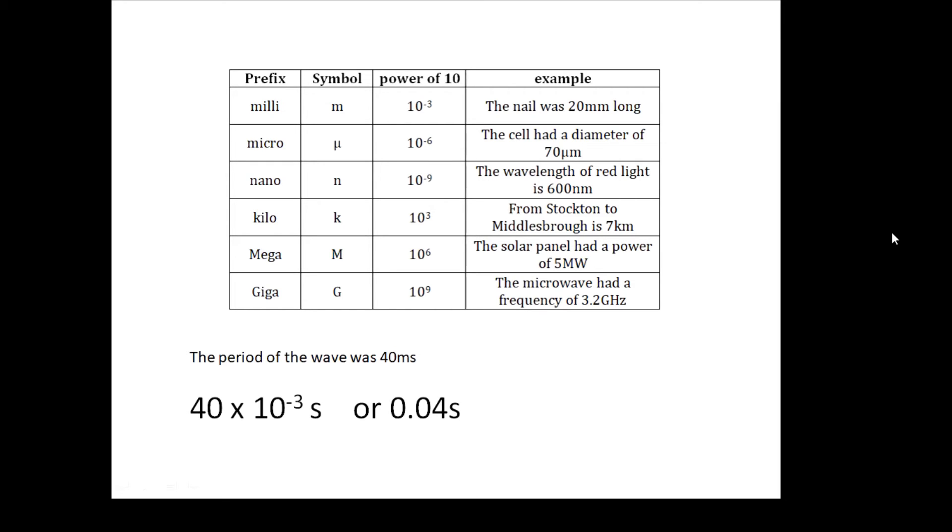The first three are for small things. The third three are for bigger things. Kilo, you should know. A kilometer is 1,000 meters, 10 to the 3 meters. Mega is a million, 10 to the 6. The solar panel had a power of 5 megawatts, 5 million watts. And giga is 10 to the 9. The microwave had a frequency of 3.2 gigahertz. That's 3.2 times 10 to the 9 hertz. You must learn your prefixes and be able to use them.